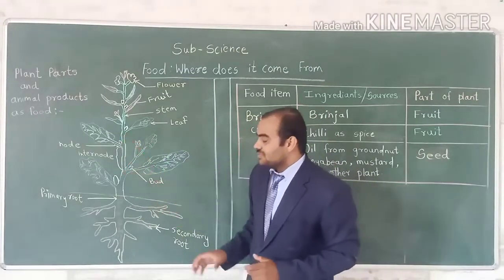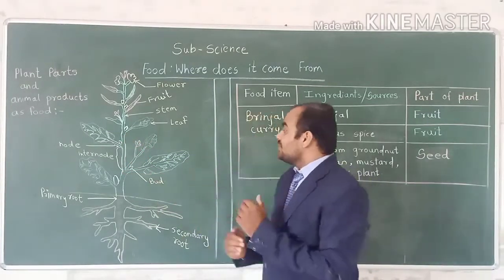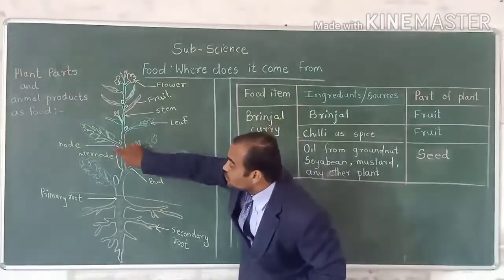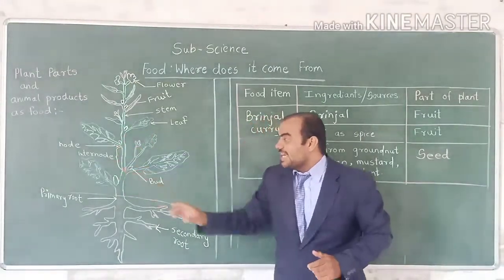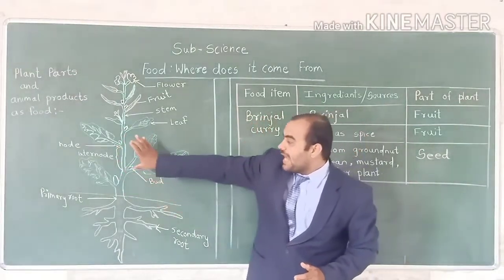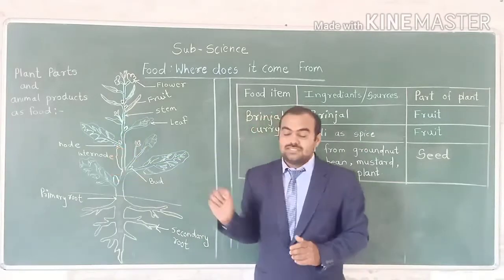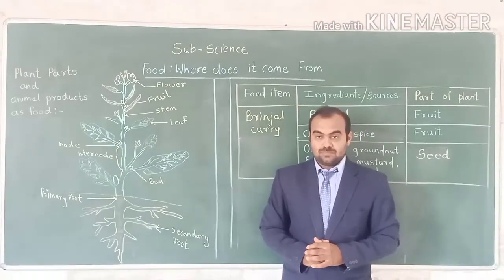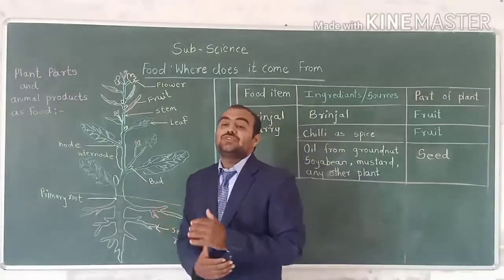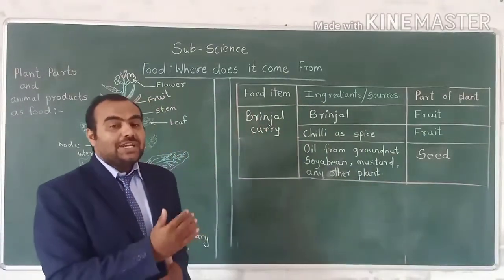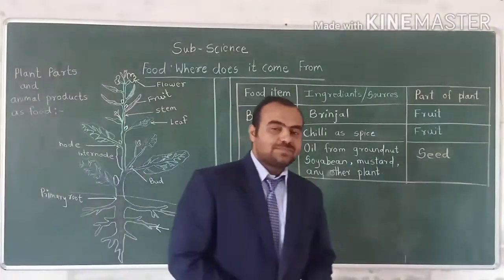The part between two nodes — here is one node and here is another node — the part between these two nodes is called an internode. So like that, we are using both the shoot and root of the plant.